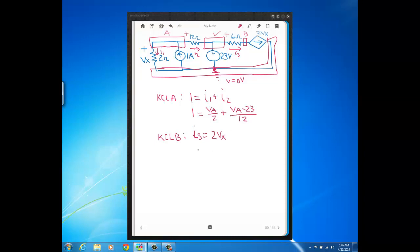Then down here, I3 will be 23 minus VB over 6, and that's equal to 2Vx.